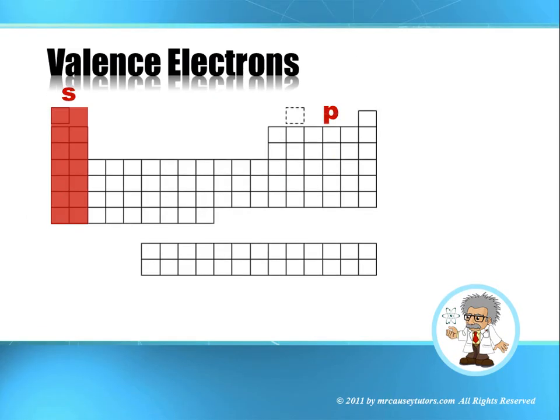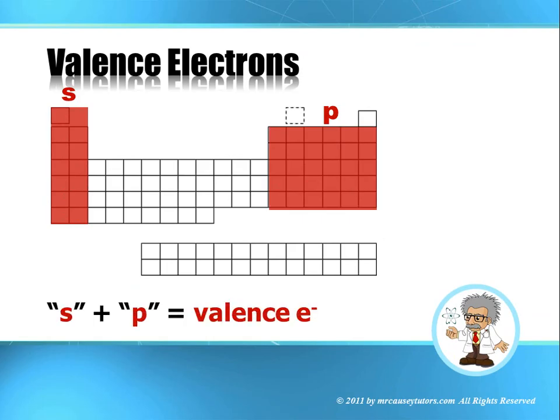S and P's. And there you look at the red. That shows us what we're looking at. And S plus the P's equals valence electrons.